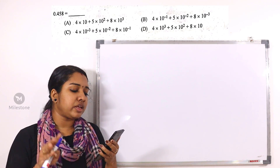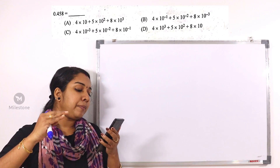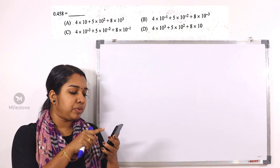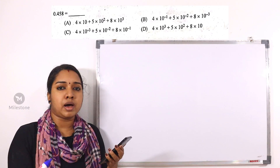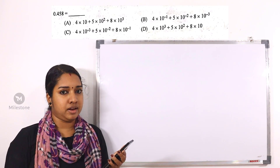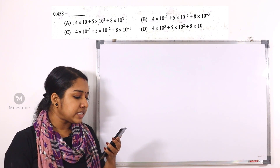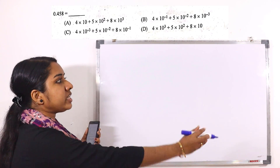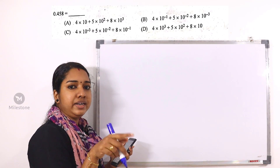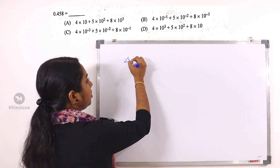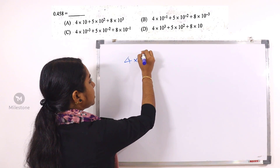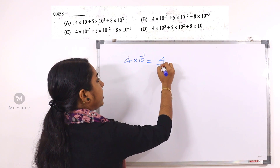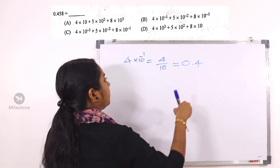The second option involves 4×10 raised to minus 1. Now, 10 raised to minus 1 is 1 by 10. So 4×10 raised to minus 1 is 4 by 10, which we write as 0.4. So the first option is not correct.